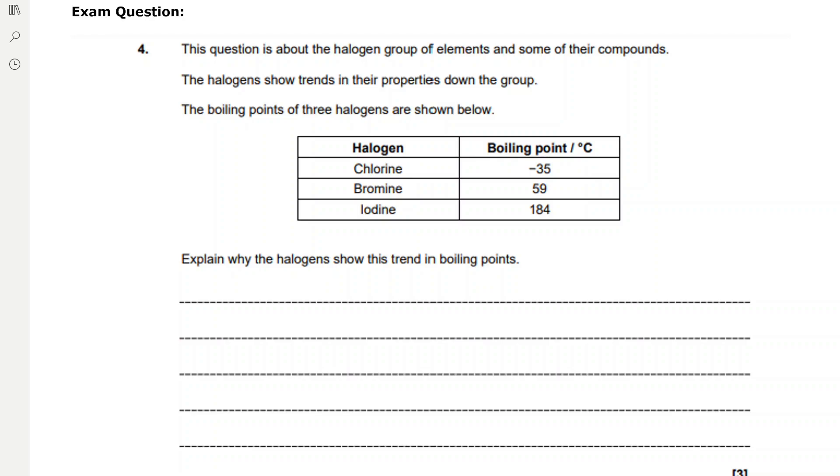This is an easy two-mark question if you know how to answer it. Down the group, the number of electrons in the halogens increases. Because the number of electrons increases, the strength of the London forces down the group increases, and therefore the London forces require more energy to overcome down the group.